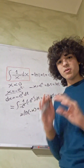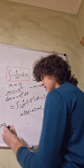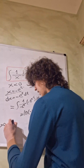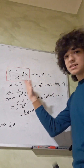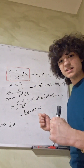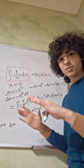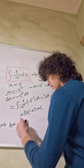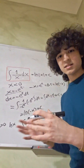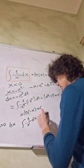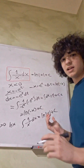Now remember what we got earlier: when x is greater than zero, this integral equals the natural log of x, and when x is less than zero, we have the natural log of minus x — but since x is negative, minus x is always positive. In other words, the general case is that the integral of 1 over x dx, regardless of the sign of x, equals the natural log of the absolute value of x, plus c.